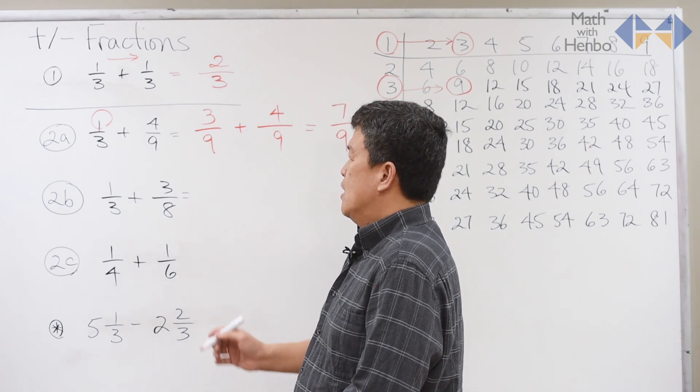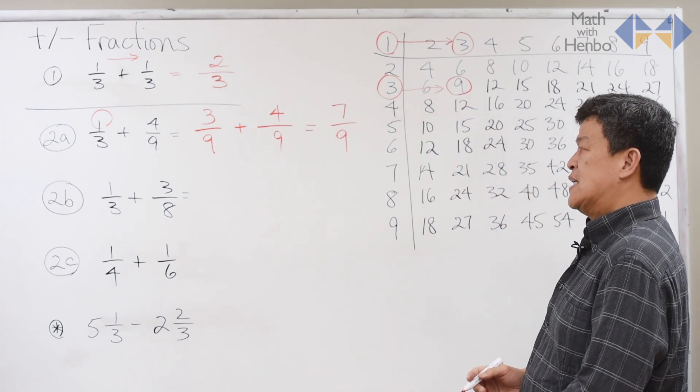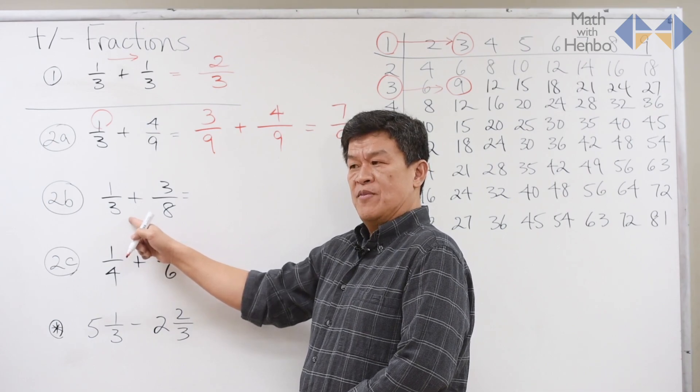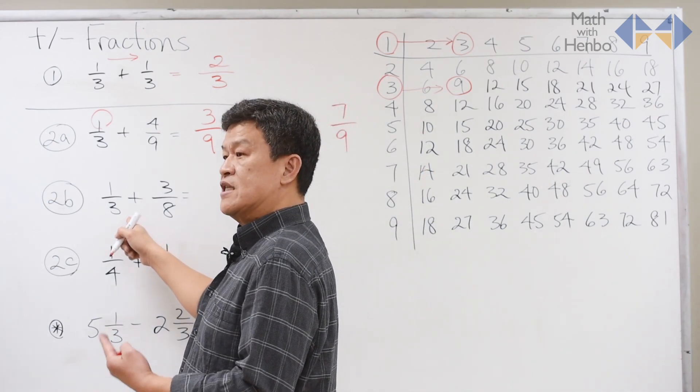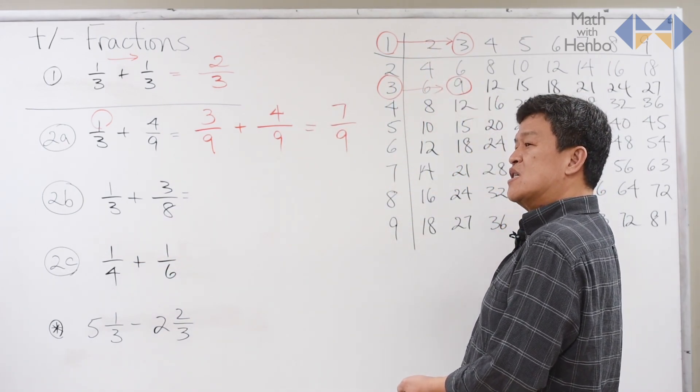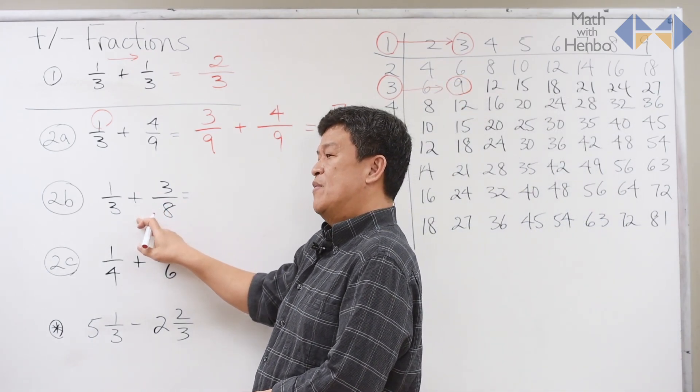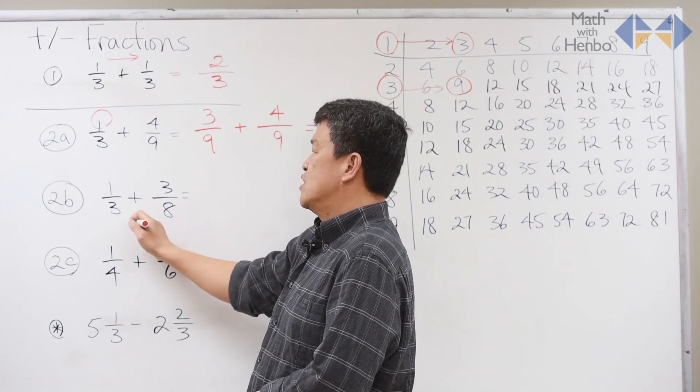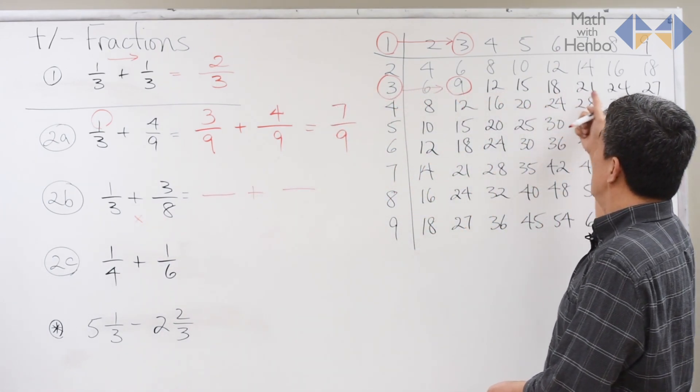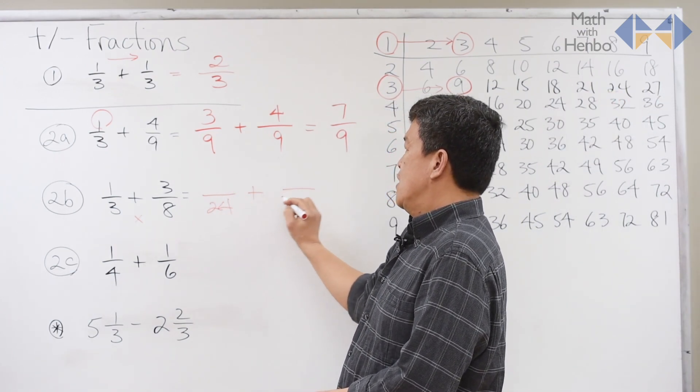Second step. If the bottom numbers are different, but 3 obviously can't become an 8, all we have to do is see if one of them is a prime number. Prime number is a number that can be divided only by itself to the answer of 1. All the numbers inside the times table are known as composite numbers. That starts with 4. That basically means 3 is a prime number, and it can't become an 8, so we just simply multiply 3 by 8. And that gives us 24.